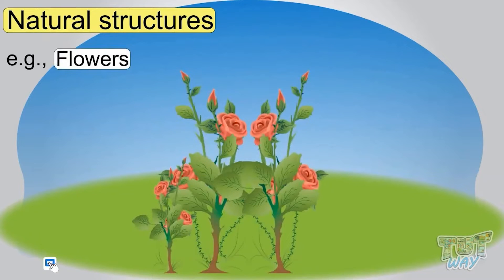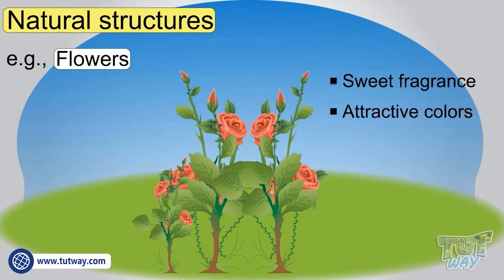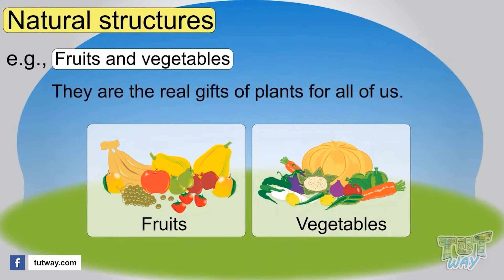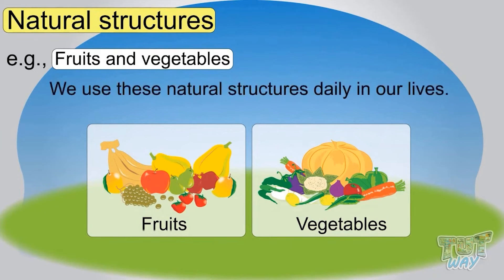Flowers are a beautiful natural structure. They have sweet fragrance and attractive colors. They make seeds for the plants. Fruits and vegetables are natural structures we eat. They are real gifts of plants for all of us. We use these natural structures daily in our lives.